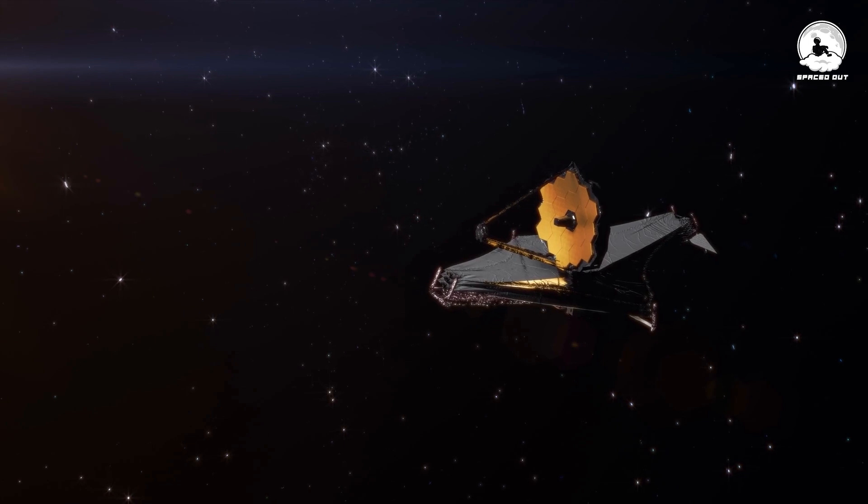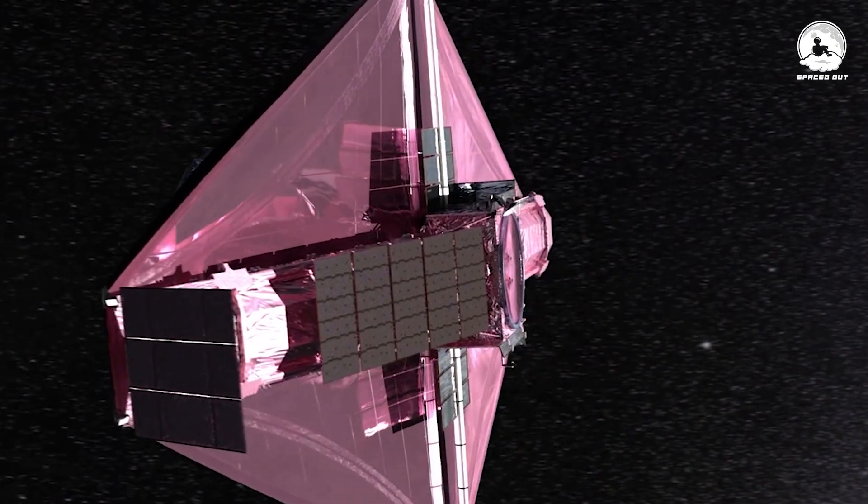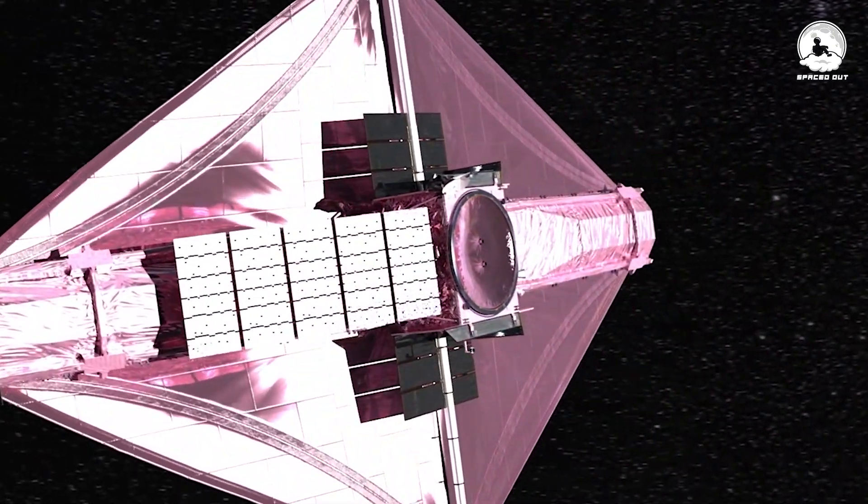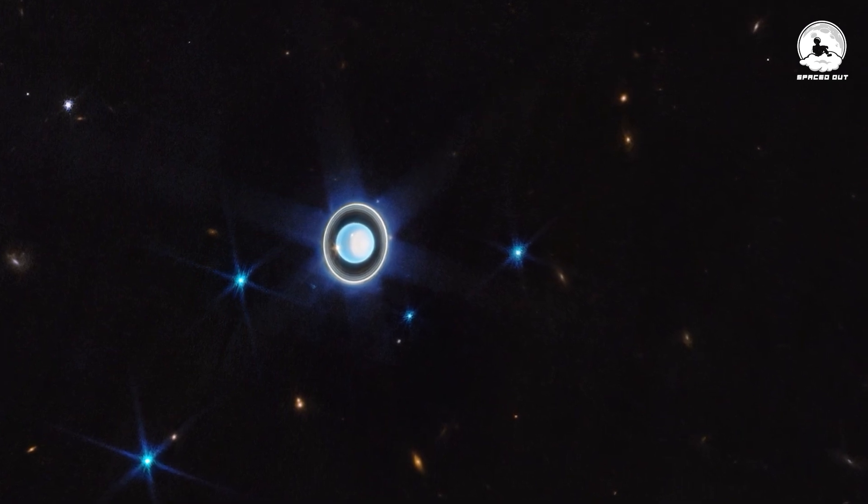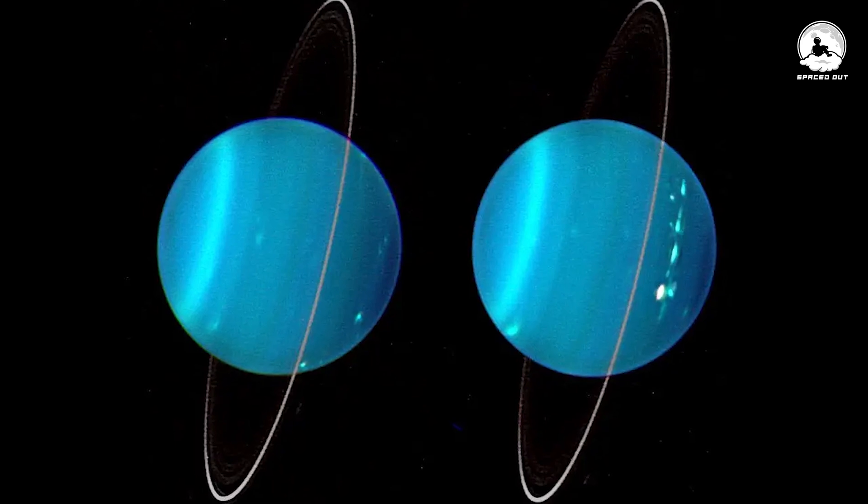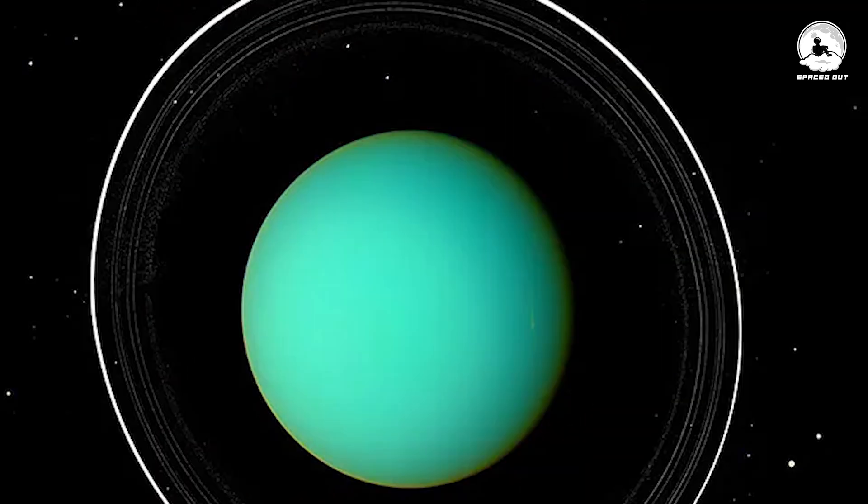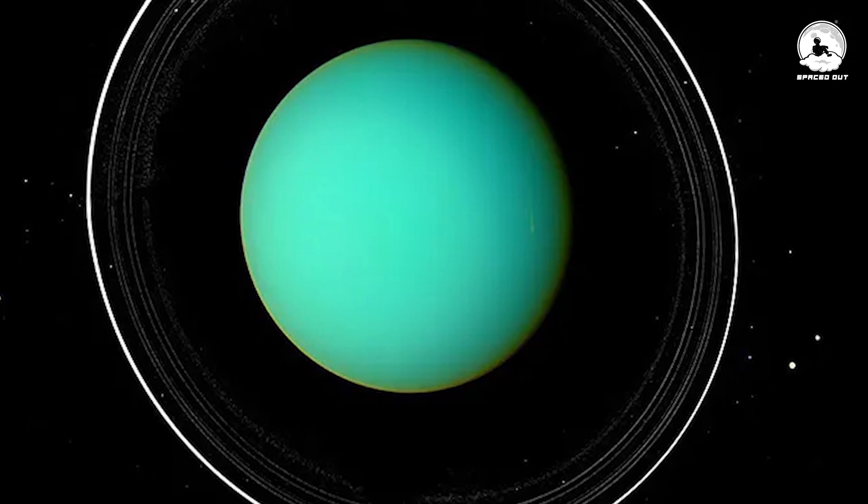However, Webb stands out because it can clearly see these rings, all thanks to its infrared vision and exceptional resolution. In this fresh image, we get a closer look at the rings of Uranus, revealing not only more delicate dust particles, but also uncovering gaps and intricate structures within them. Let's break it down a bit.